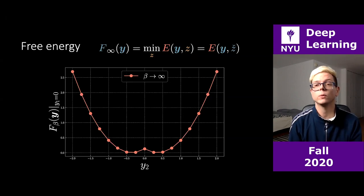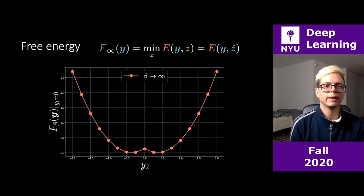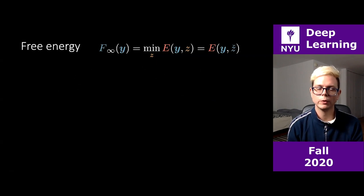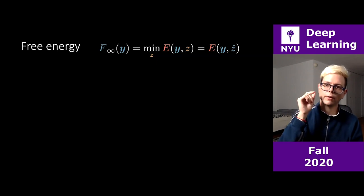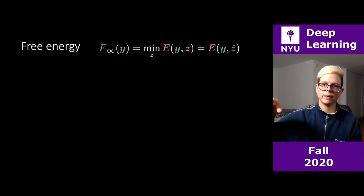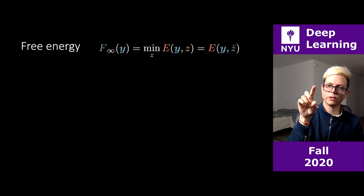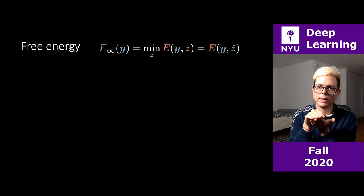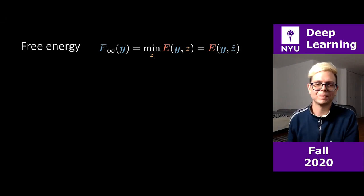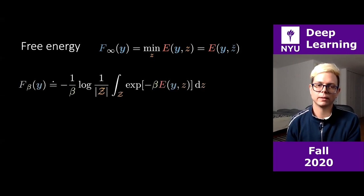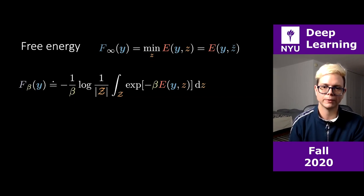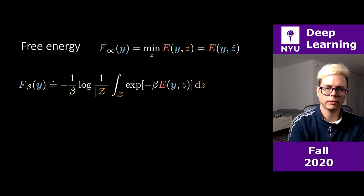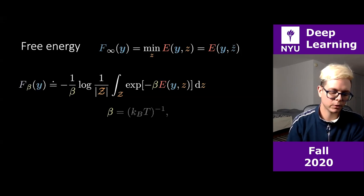The free energy is the minimum value of the energy e spanning across y and z. For a given y, we have an energy over z, and the free energy is the value of the energy at the location of the minimum — that minimum value of e is the free energy.